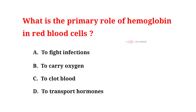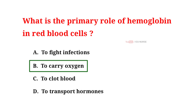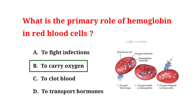What is the primary role of hemoglobin in red blood cells? A. To fight infections. B. To carry oxygen. C. To clot blood. D. To transport hormones. And the correct answer is B: to carry oxygen. The primary role of hemoglobin in red blood cells is to carry oxygen.